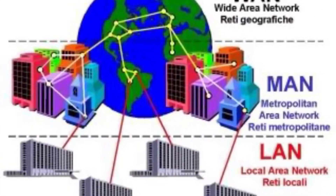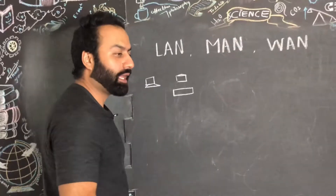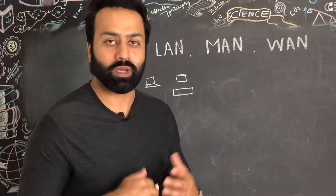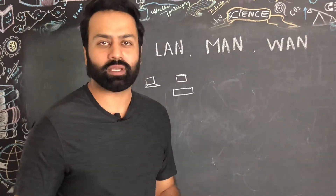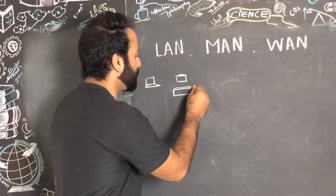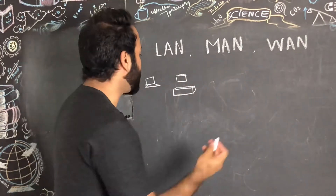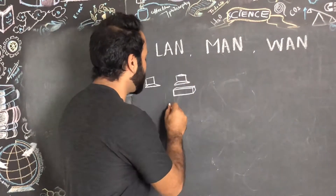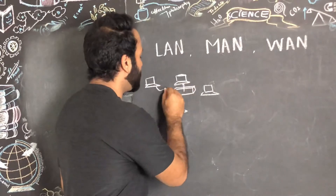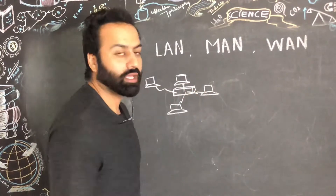Network types depend on how large they are and how much of an area they cover geographically. So if you have a switch at the office — I want to explain this in a very basic way first, then we'll move on to advanced ways. One switch here is a network device that connects network devices with one another. For example, you have one computer, two computers, three or four computers connected to this switch.